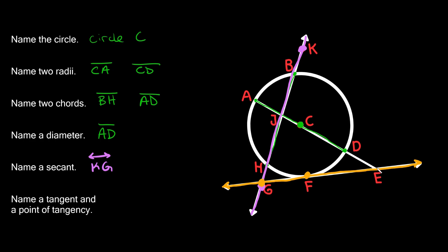So G, E, so that line right here, line GE. And it also says name a point of tangency. So the point of tangency is just the point where this tangent intersects the circle. So that's at this point right here at F. So we could just say point F.